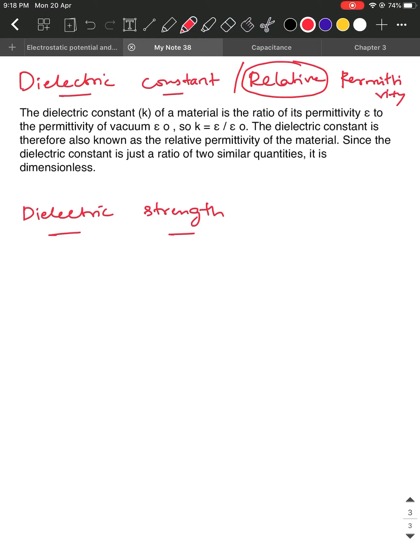So here relative permittivity has something to do with the ratio. Whenever you are taking a ratio, one of the values will be the known value. As the name suggests relative permittivity, one of the permittivities which we know till now is epsilon naught, it is a fixed value.